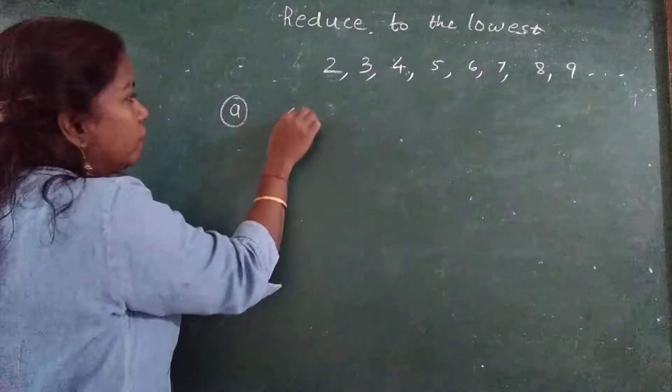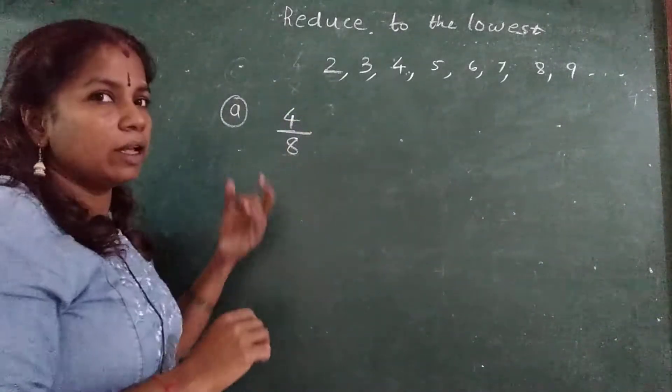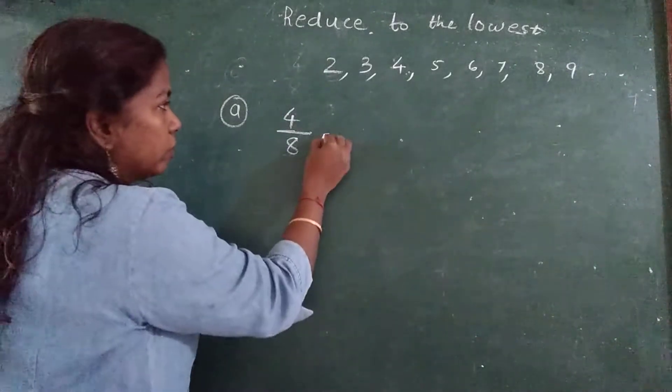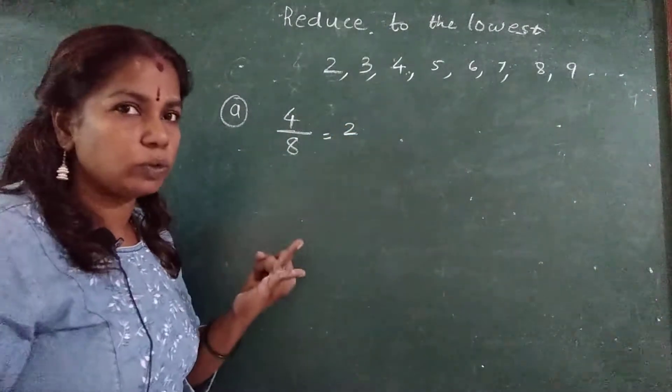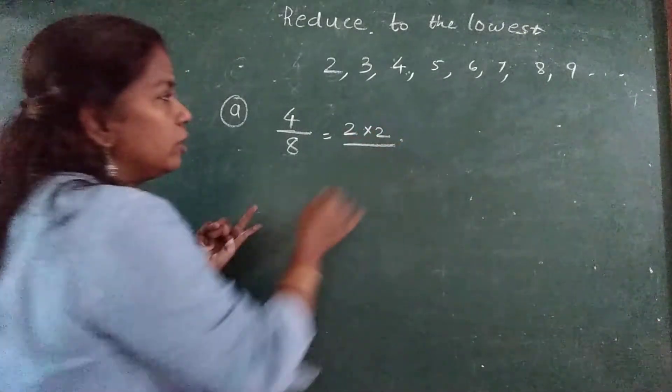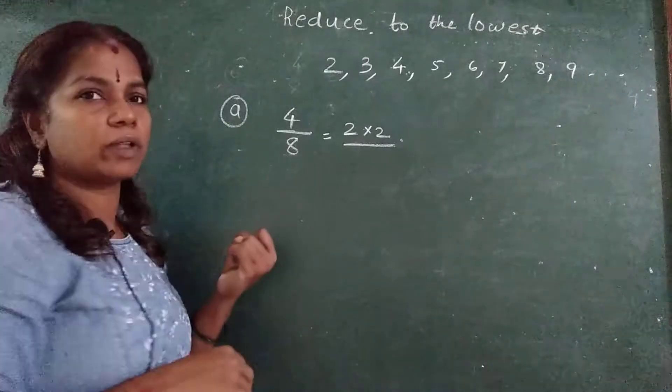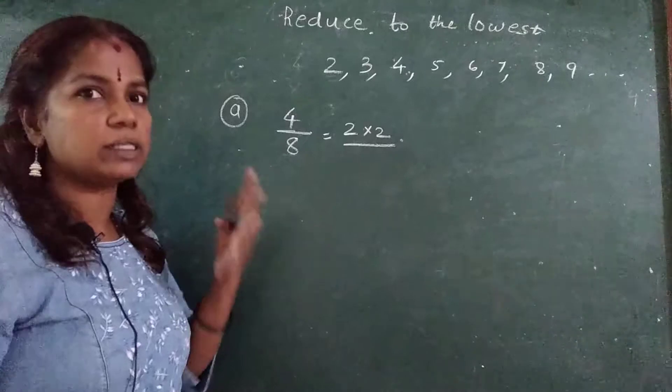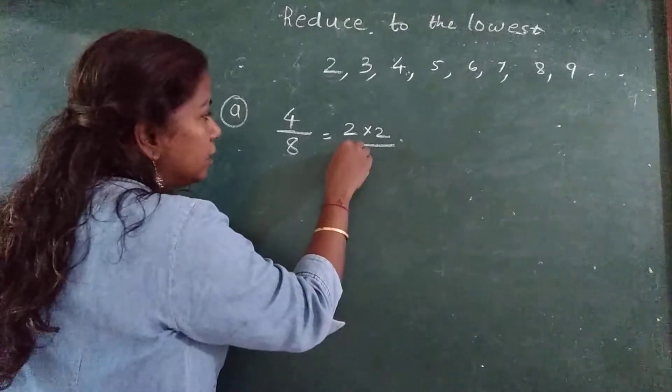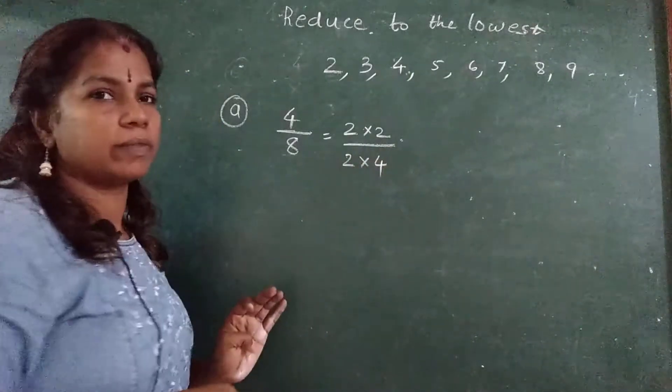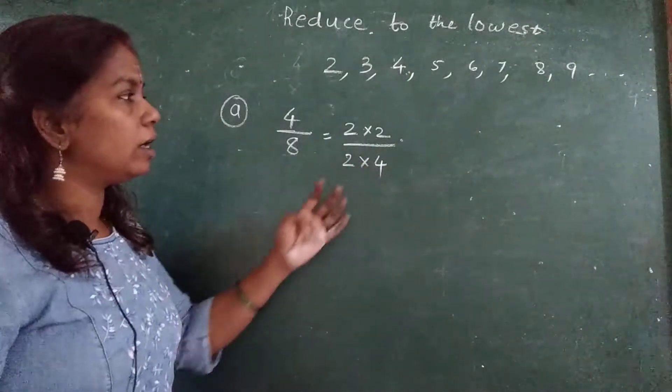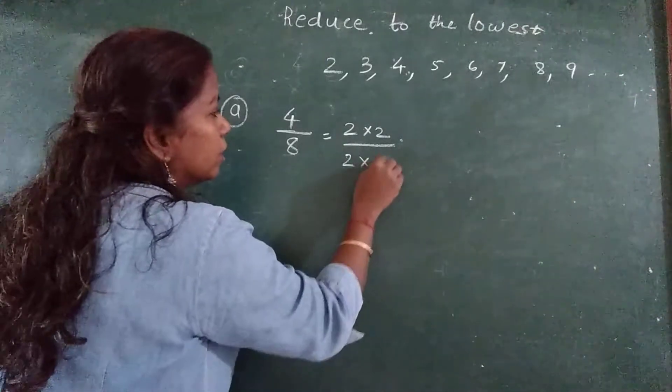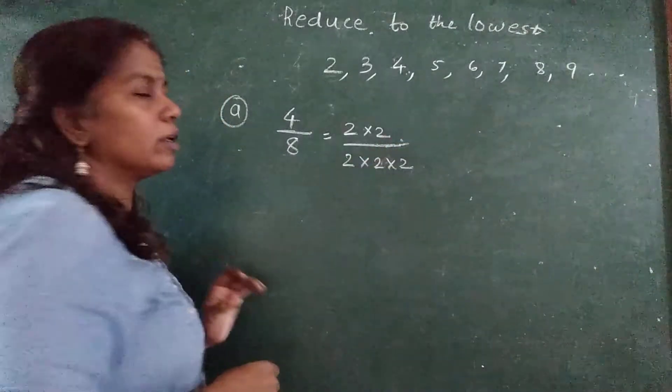Next, the question was 4 upon 8. 4, tell me in the table of 2. 2 ones are 2, 2 twos are 4. So 4 can be written as 2 twos are 4. 8, how it is written? 2 ones are 2, 2 twos are 4, 2 threes are 6, 2 fours are 8. 8 is 2 fours are 8. Now this 4 can be written as 2 twos are.